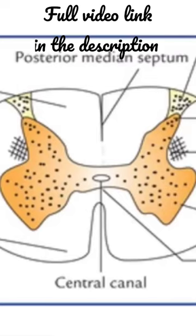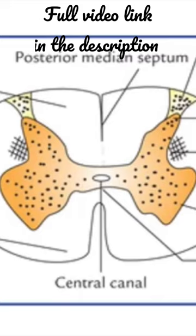This picture of the cross section of the spinal cord shows there is a center core of gray matter, which forms a center core, and a peripheral zone of white matter.